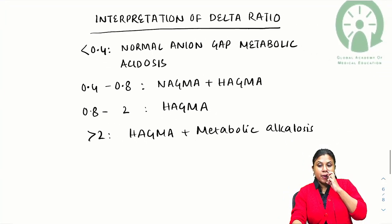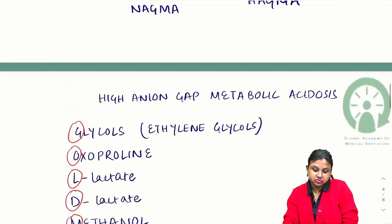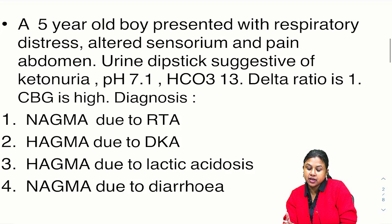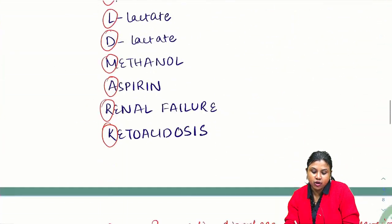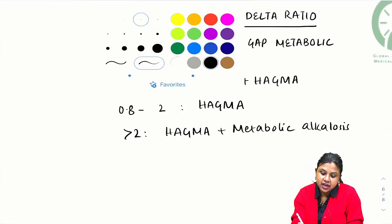Having known this, let us go back and look at the scenario once more. Urine dipstick is positive for ketones. pH is 7.1, bicarb is 13—that means we are dealing with acidosis. pCO2 is not given, but we can understand this is something to do with metabolic acidosis. Delta ratio 1 means it is falling under HAGMA.